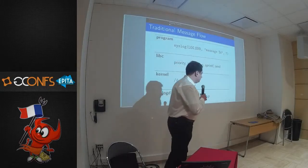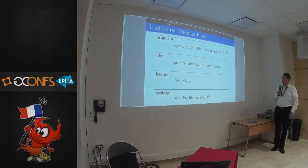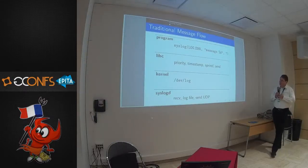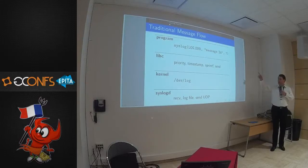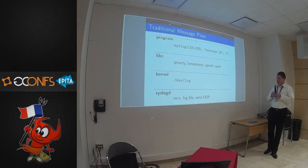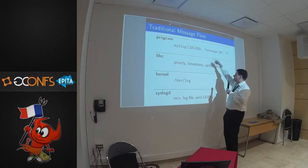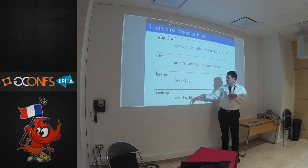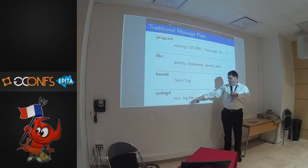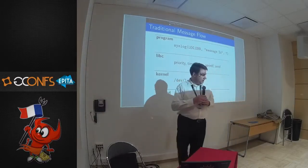So that's how syslog works when you are a C programmer. There's a libc function called syslog. You can specify several severities — we have an error message, you can do printf-style formatting. Then everything goes to libc, where the priority is processed, converted to a number. Timestamps are added, the printf is done, and then it's sent to devlog — a Unix domain socket. The syslogd is listening on that, receives the message, writes it to a log file or sends it via UDP. This has been there forever, more or less.